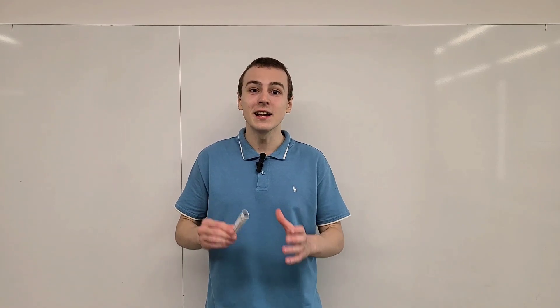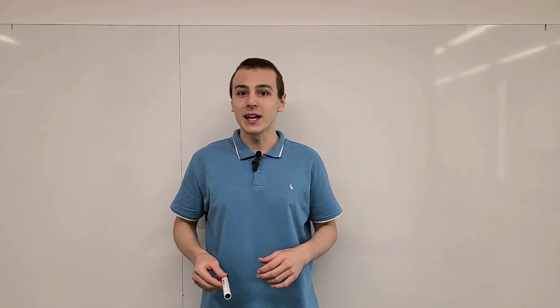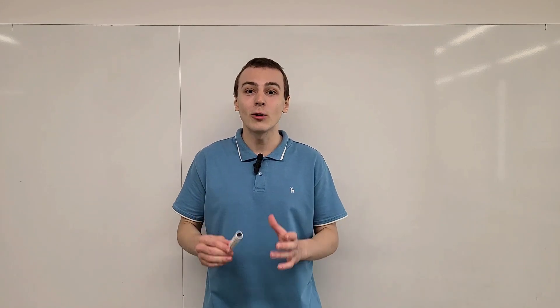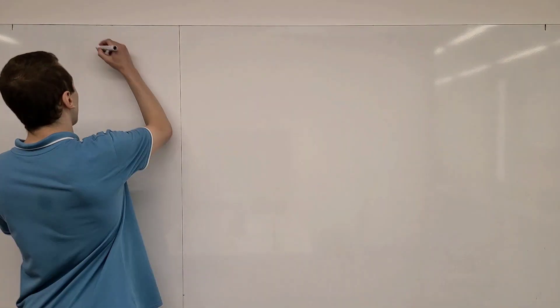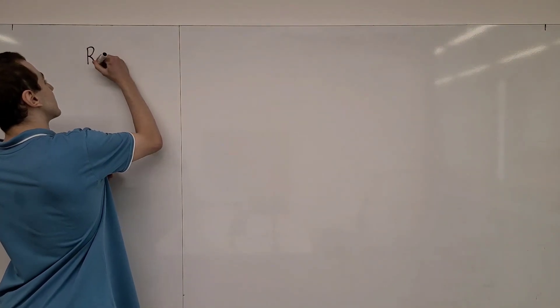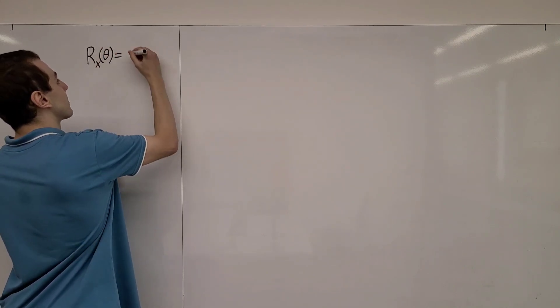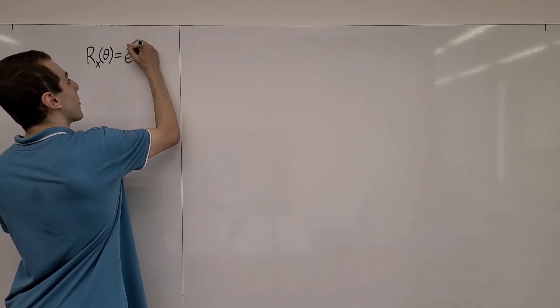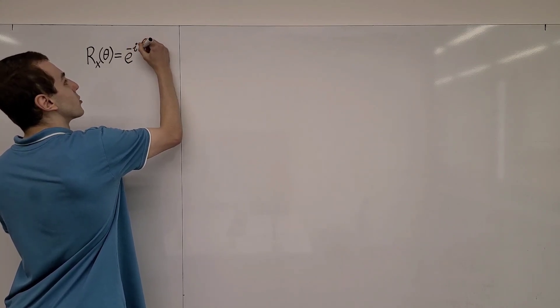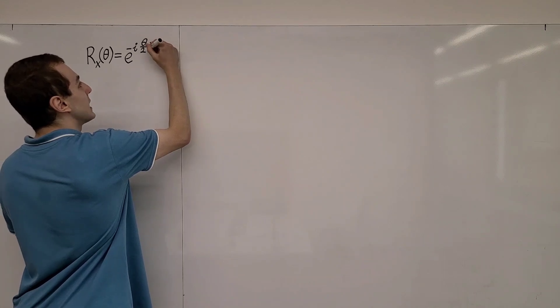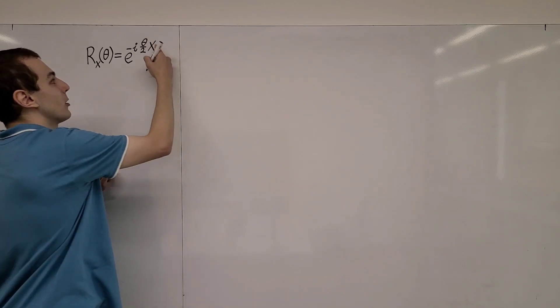Let's define the rotation operators. We're going to do that by taking the complex exponentials of the Pauli matrices. Let's begin by taking the complex exponential of the Pauli X matrix. So I'm going to define R sub X as a function of the angle theta as being equal to the exponential of minus i theta on 2, and then we have the Pauli X matrix or the Pauli X operator.